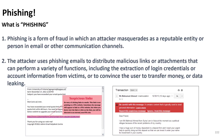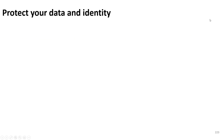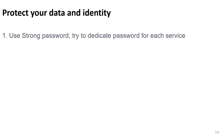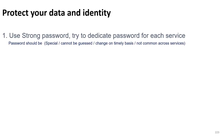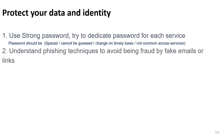To protect yourself from phishing, awareness is very important. First, use a strong password and dedicate a unique password for each service — a compromised Gmail, Outlook, or Yahoo account can be used to launch attacks on your contacts. Controls to prevent password leakage include using a strong password that is hard to guess, changing it periodically, and making it unique for each website.